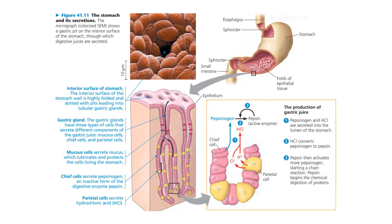Having a stomach is the main reason you do not need to eat constantly. With its accordion-like folds and highly elastic walls, your stomach can stretch to accommodate about two liters of food and drink — usually enough to satisfy your needs for hours. Some chemical digestion occurs in the stomach; the stomach secretes gastric juice, which is made up of a protein-digesting enzyme, mucus, and strong acid. The pH of the gastric juice is about 2.